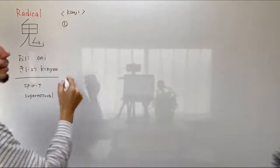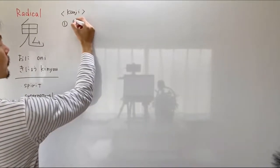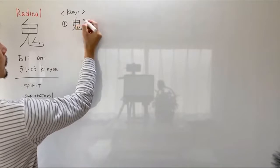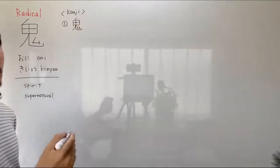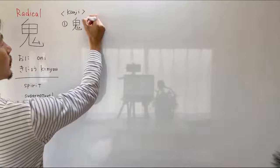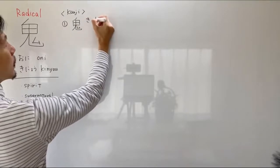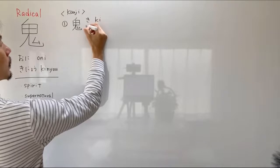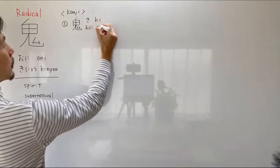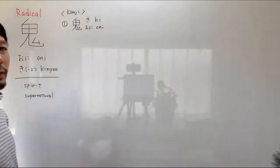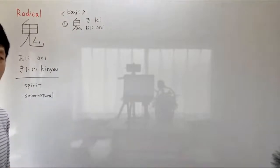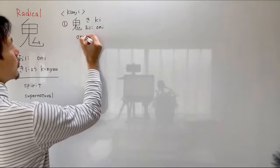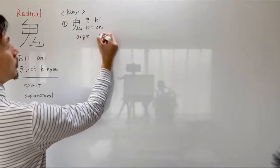Number 1. The readings of this character are KI or ONI (鬼). And it means ogre, or oni.